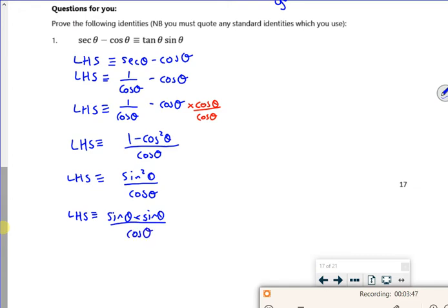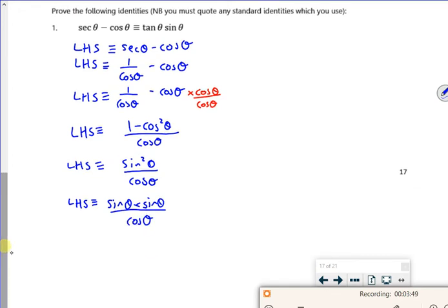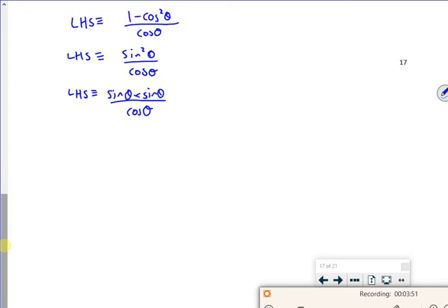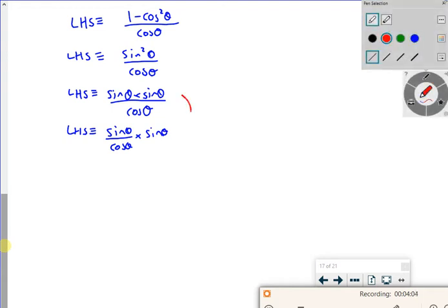So my left hand side is sin theta times sin theta over cos theta. Now people don't like this next step. I'm just going to slightly rewrite this as my left hand side is sin theta over cos theta times sin theta.